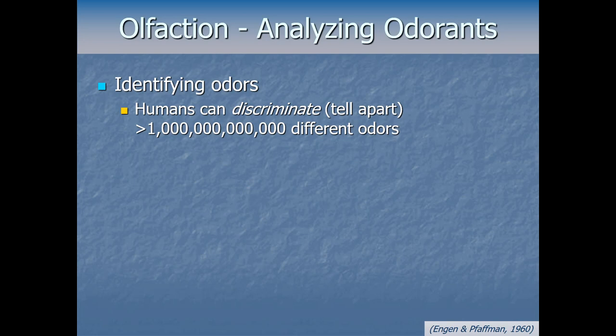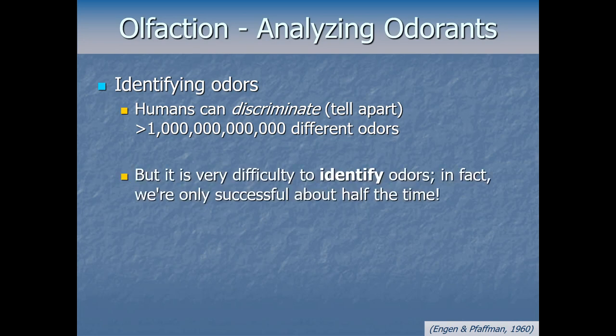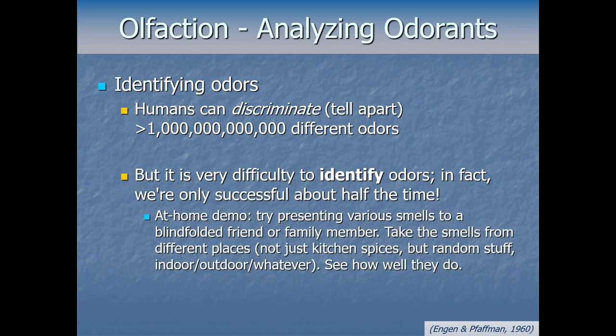Identifying odors turns out to be really difficult — we actually suck at it. In controlled lab circumstances, without hints or contextual cues, we're only successful in identifying odors about half the time. You can try a simple version at home: have a partner act as experimenter; the person being tested wears a blindfold, and the experimenter gathers random objects from around the house — maybe even wearing headphones with white noise to avoid auditory clues.